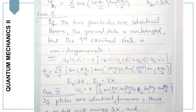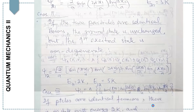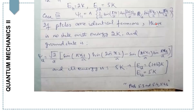Case 3: if the particles are identical fermions, there is no state with energy 2K. The ground state is now ψ_{12} using the antisymmetric combination with a negative sign, and the energy equals 5K, obtained by putting n₁=1 and n₂=2.